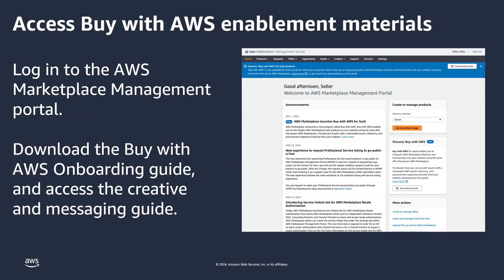As a seller on AWS Marketplace, you can get started in just a few steps. First, log into the AWS Marketplace Management Portal with your AWS Marketplace Seller Account and download the Buy with AWS Onboarding Guide, Branding Materials, and Specifications. A link to the Buy with AWS materials is included in the description for this video.